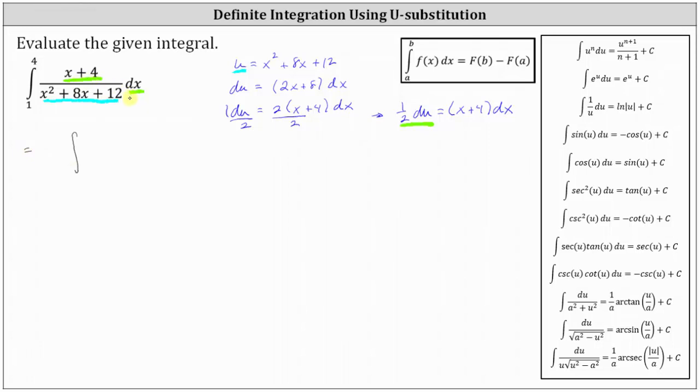Again, the quantity x plus 4 times dx is equal to 1 half du. We will factor out the 1 half, and then we have du. And now the integrated function is just 1 divided by u, since u is equal to x squared plus 8x plus 12.